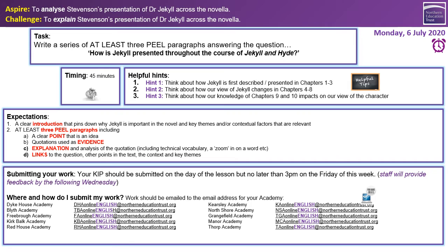We have a couple of helpful hints. Hint one: think about how Jekyll is first described or presented in chapters one to three. If you completed yesterday's lesson, you have some quotations from chapter three where he's first introduced. Hint two: think about how our view of Jekyll changes in chapters four to eight — again, if you completed the last lesson, you will have some quotations ready. If not, you'll have to look in the text to find them. Hint three: think about how our knowledge of chapters nine and ten impacts on our view of the character, and if you completed the last lesson you will have quotations from that final chapter where Dr Jekyll explains his point of view of the whole story.